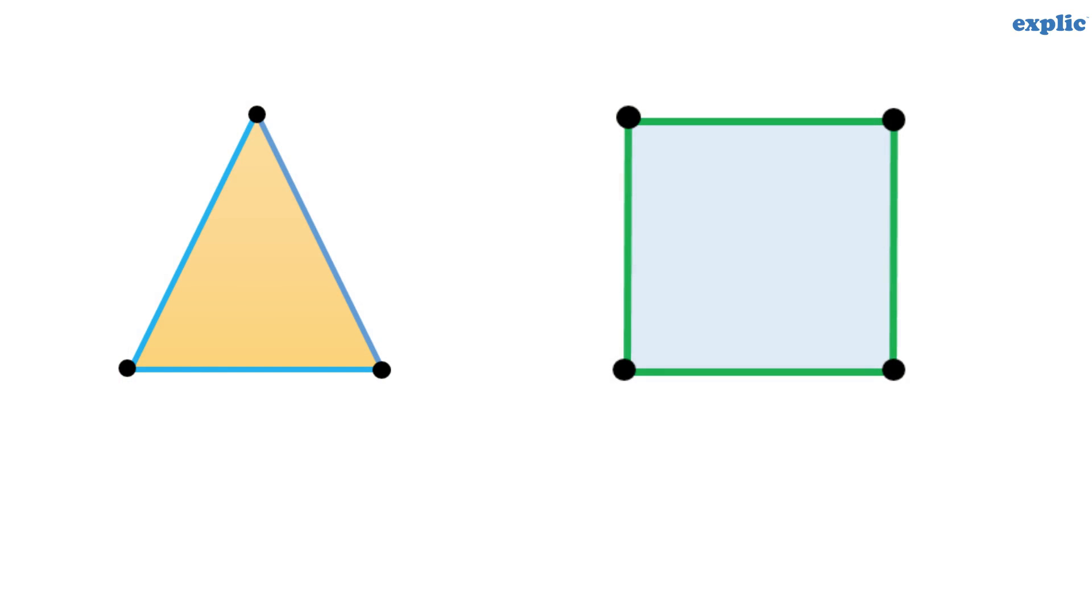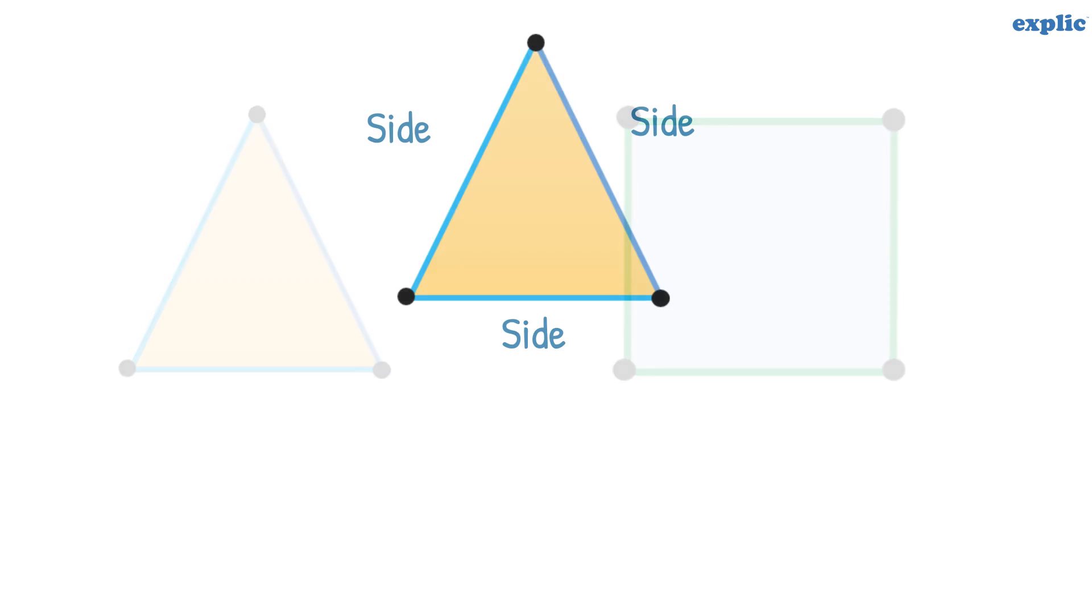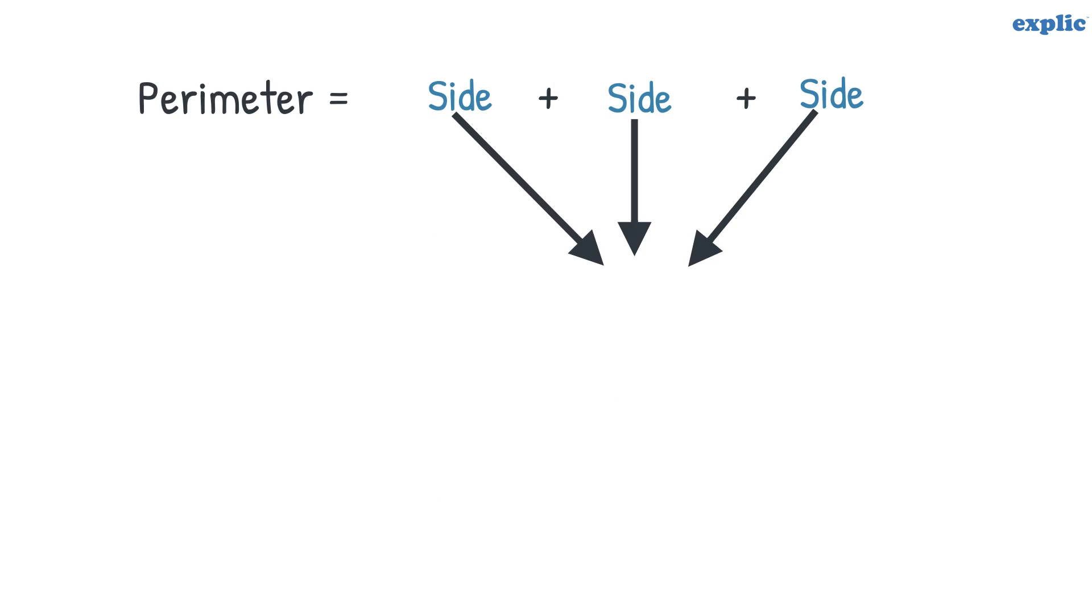As we know that, a regular polygon is a shape that has all sides equal. To derive a formula of the perimeter of the polygon, let's start with an equilateral triangle that has all sides equal. The perimeter of an equilateral triangle is equal to the sum of all three sides. The formula of the perimeter of an equilateral triangle can be written as 3 multiplied by side of the triangle.